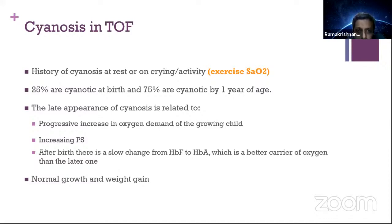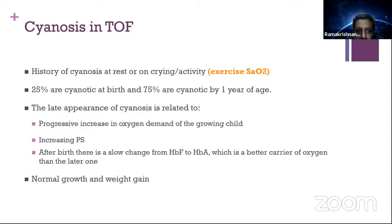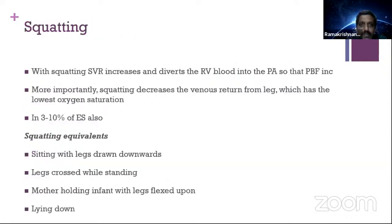The late appearance of cyanosis — why does cyanosis not appear at birth and generally appear by around 2 months of life? It is because of progressive increase in oxygen demand of the growing child, increasing PS, and a slow change from hemoglobin F to hemoglobin A, the latter being a less efficient oxygen carrier. Generally, tetralogy-physiology children have a chubby appearance — normal growth and weight gain will be there.